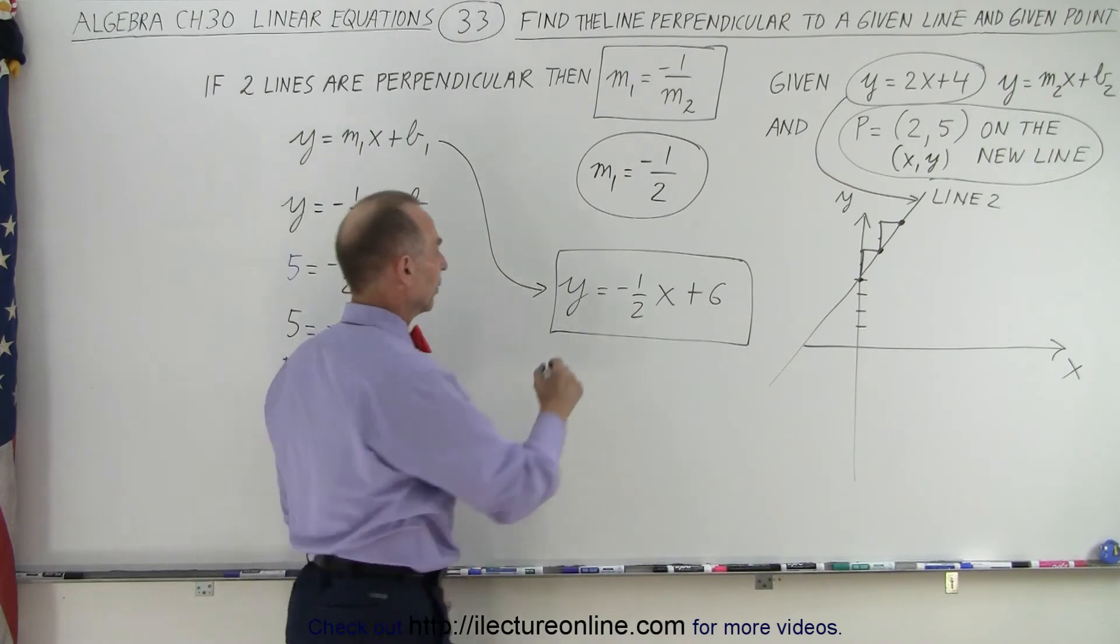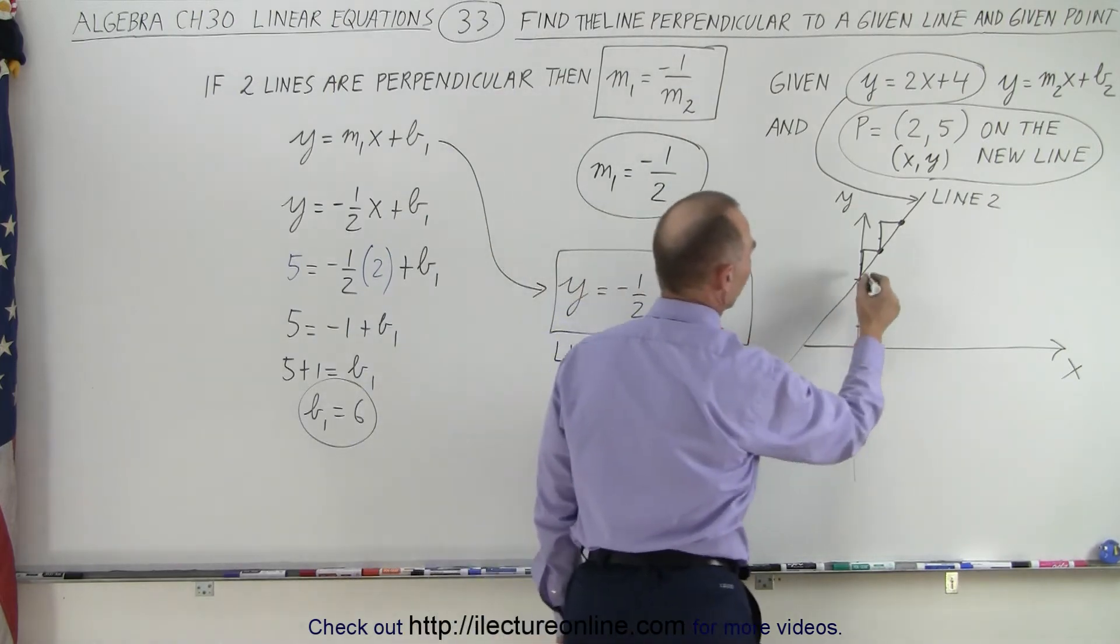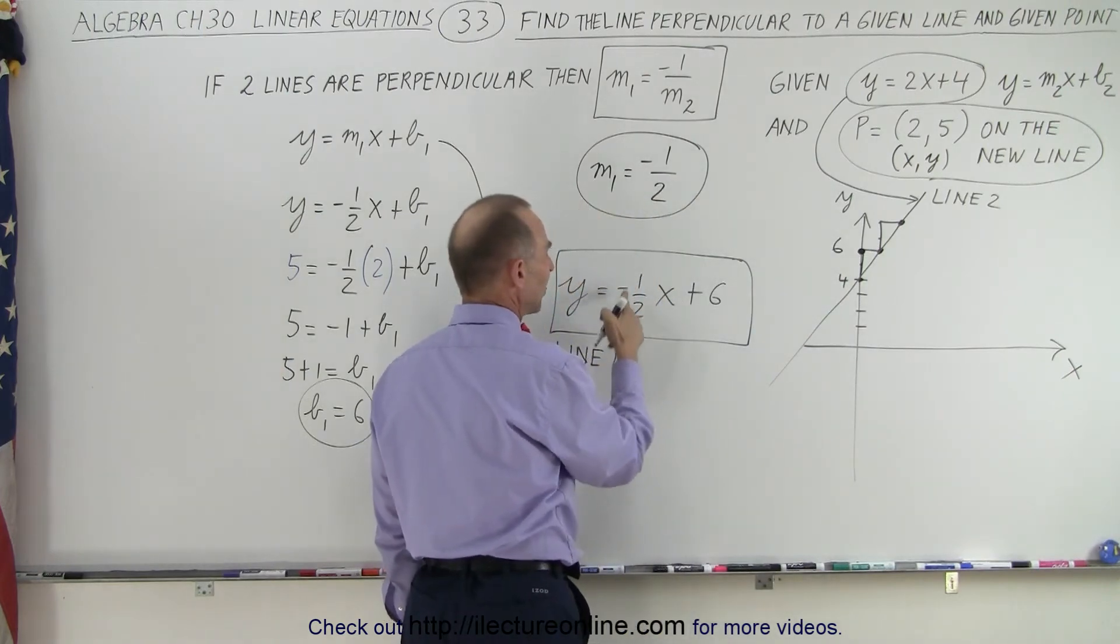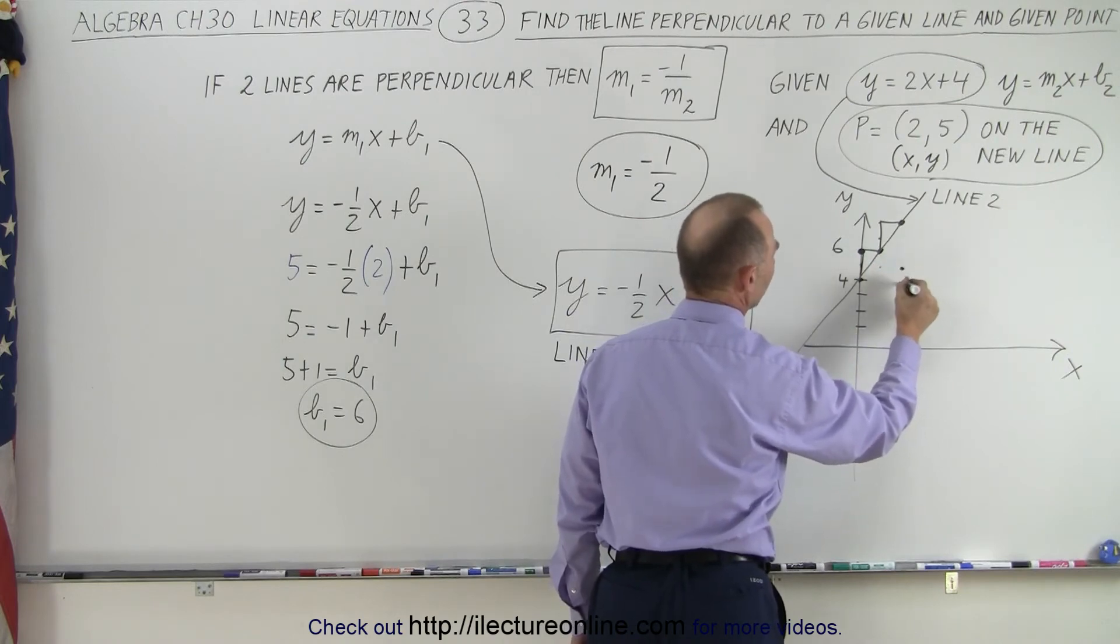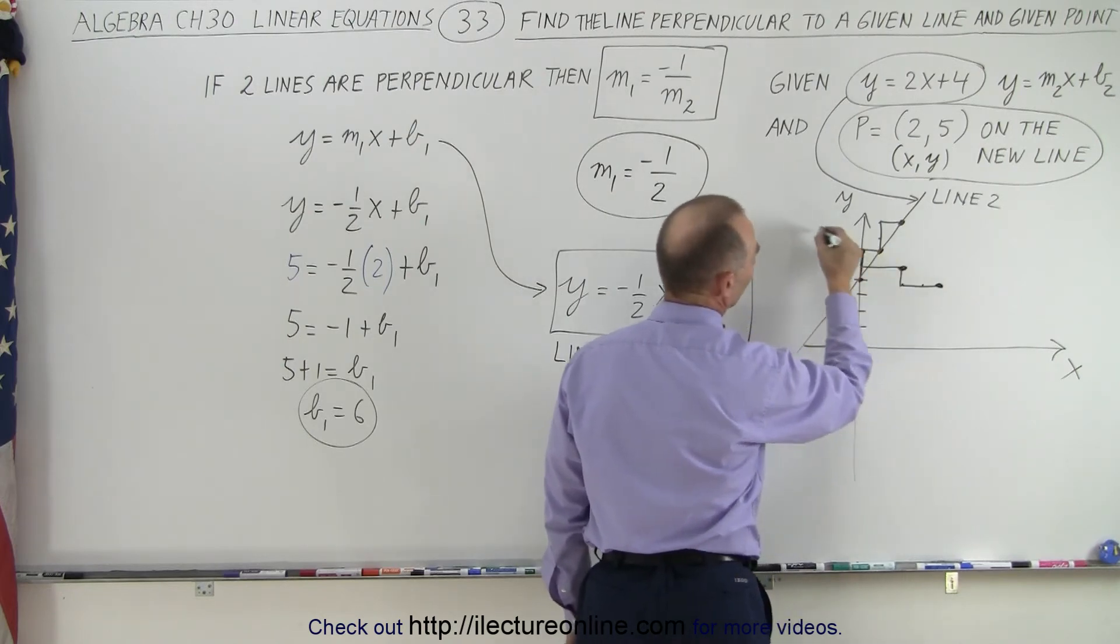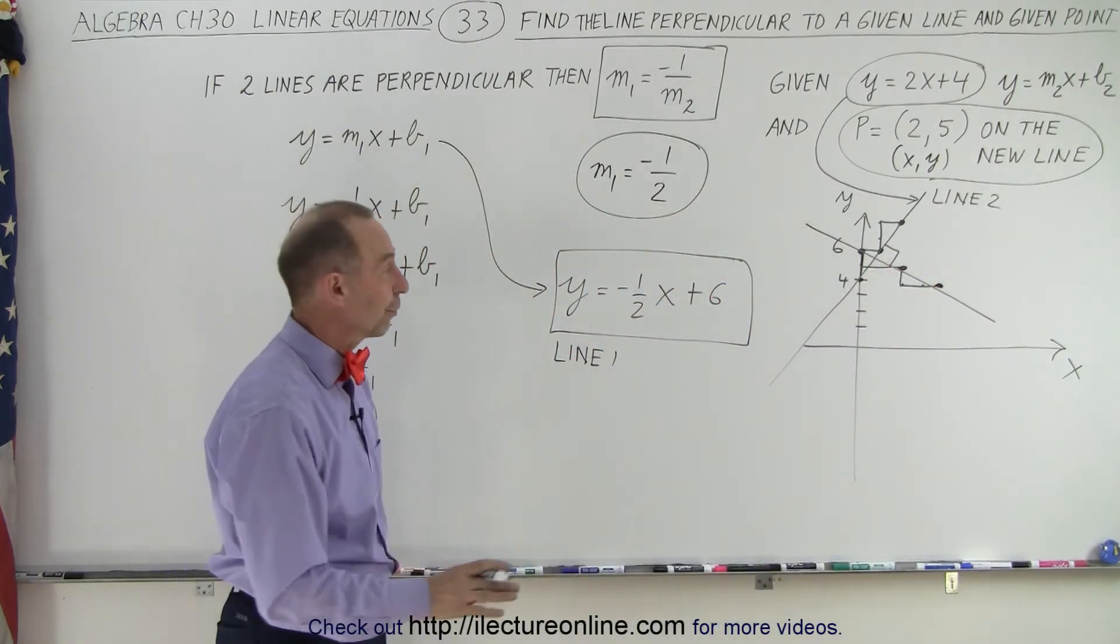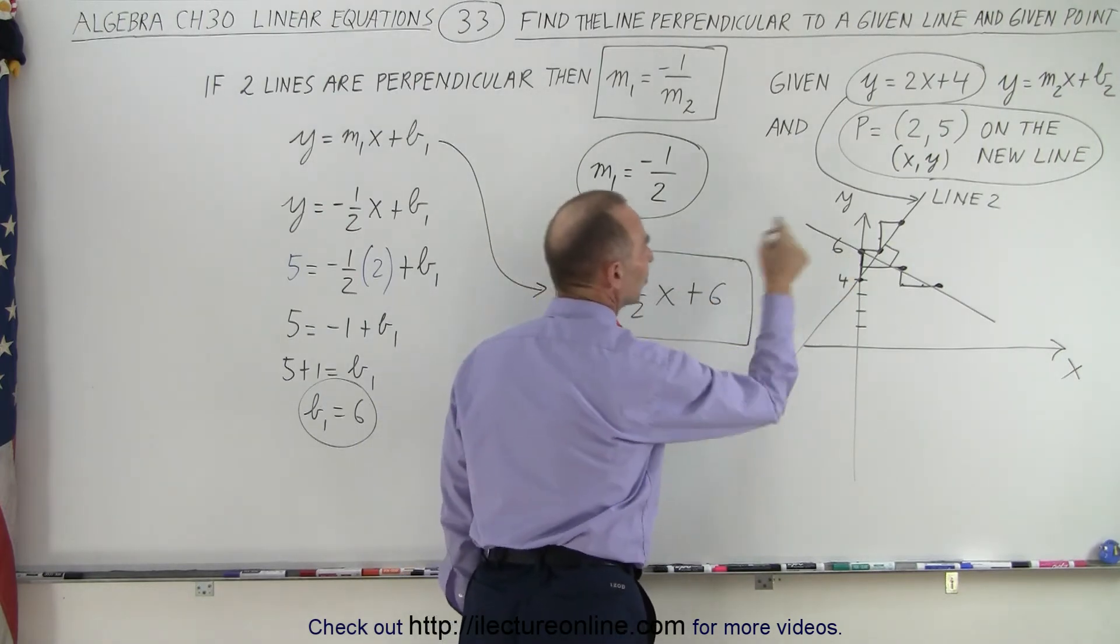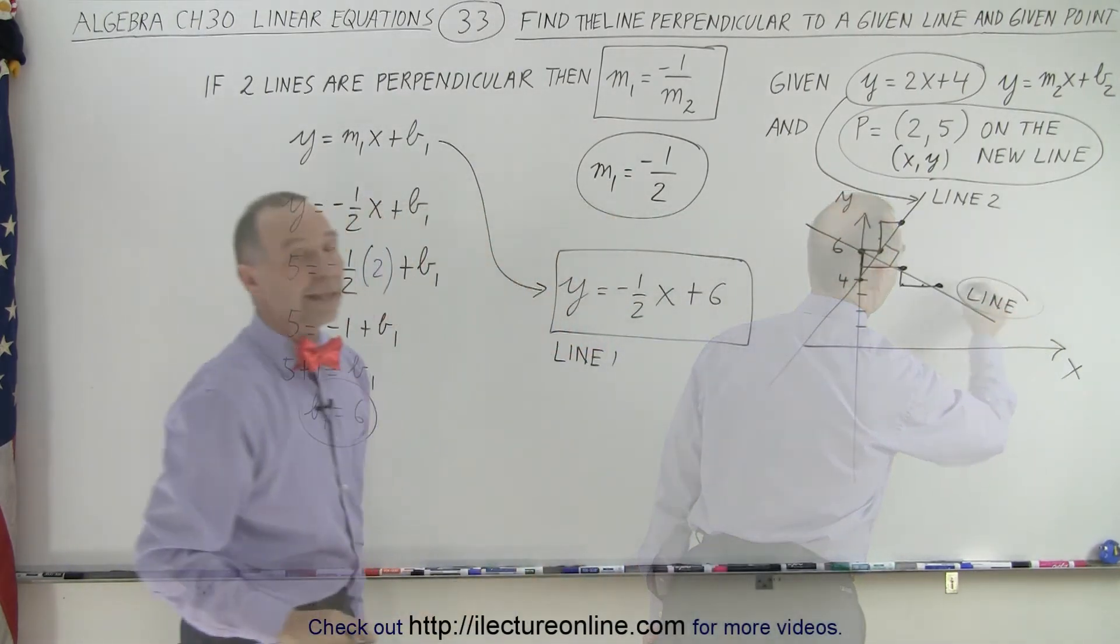And now we're going to draw line 1. So this is line 1, the one we looked for. And notice that the intercept is 6. So we got 1 - so this is 4, this is 6. But the slope is negative 1 half. That means down 1 over 2, down 1 over 2. So down 1 over 2, down 1 over 2, down 1 over 2. That gives us these points. If we connect those points, you can see that yes indeed those two lines are perpendicular to one another. And now we're looking for a specific line which meets the criteria that the slope is negative 1 half and the y-intercept is equal to 6. And that gives us the line we're looking for. And that is how it's done.